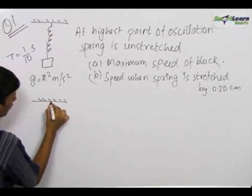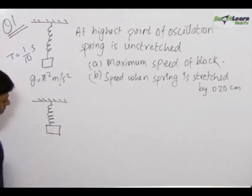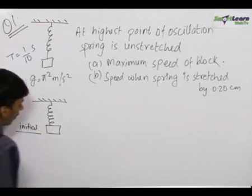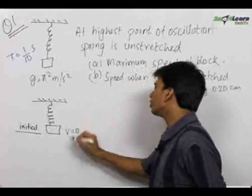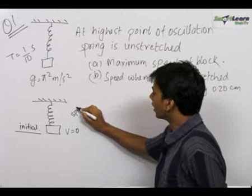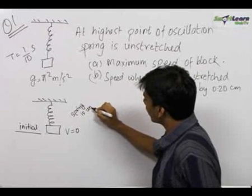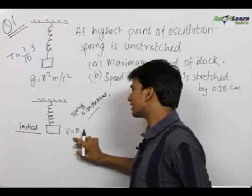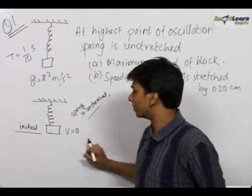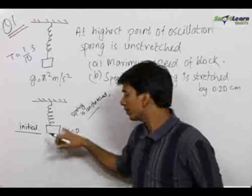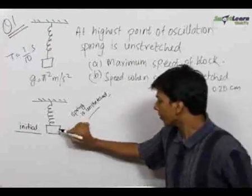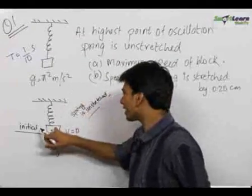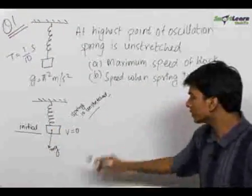Let us draw the diagram of the motion of the block. This is the initial position when the velocity of the block is 0 and the spring is unstretched. We know that velocity of an object is 0 in SHM at the extreme position, so this is definitely the extreme position for the block. Since the block is experiencing a force mg downwards and no force upward, it has acceleration in the lower direction and moves downward.